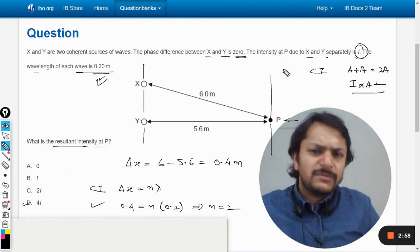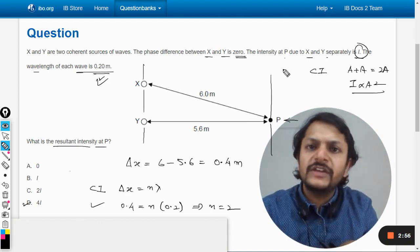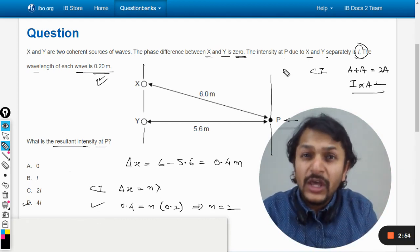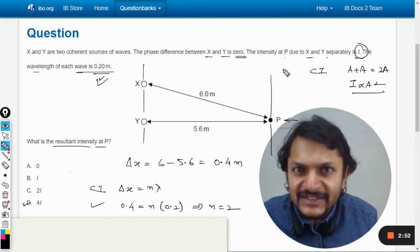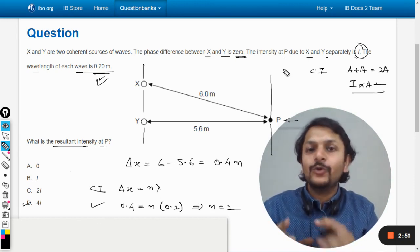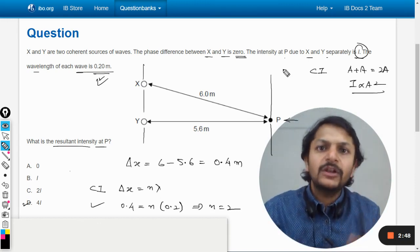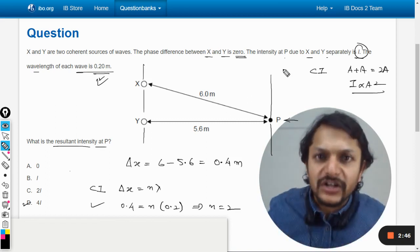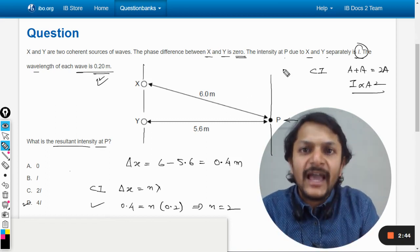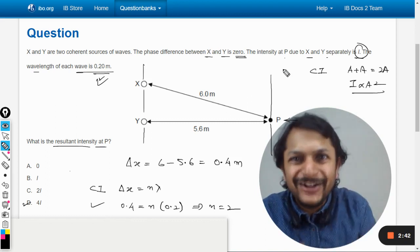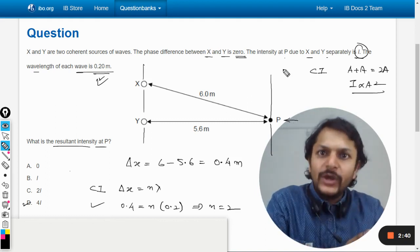Another thing my dear students. Because there is a limitation on the formulas that have been given to you. So as per the interference is concerned, IB is concerned only with two kind of things. Number 1 constructive interference. Number 2 is destructive interference.